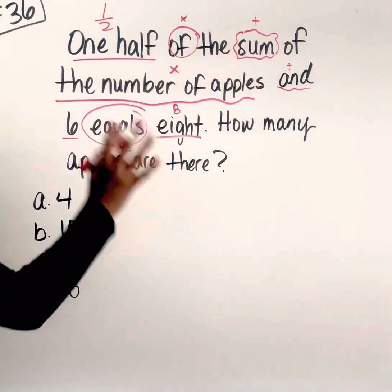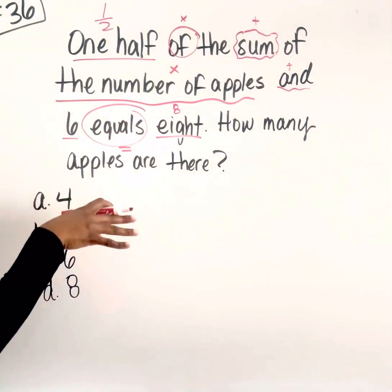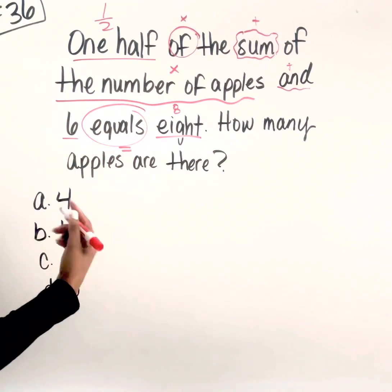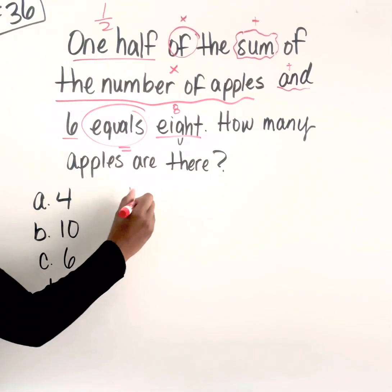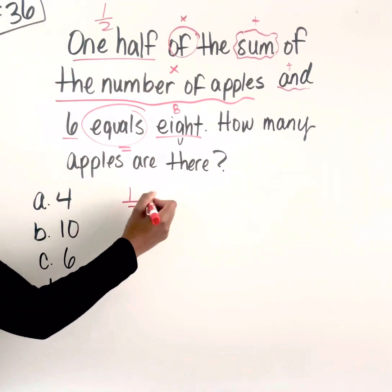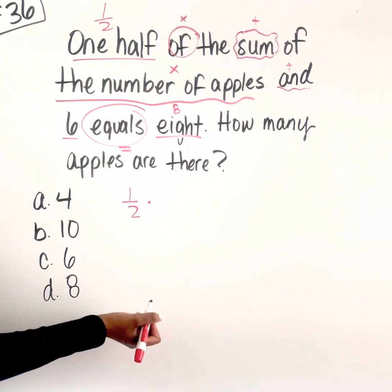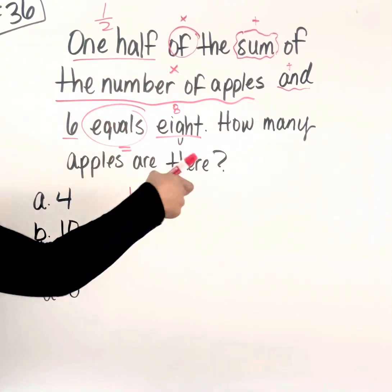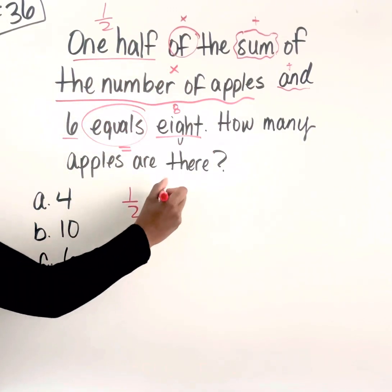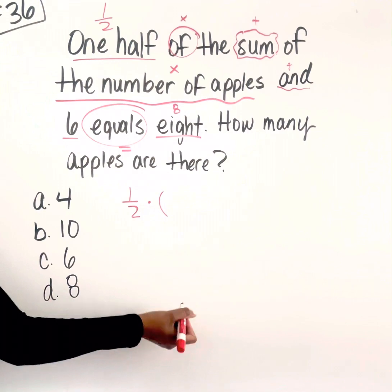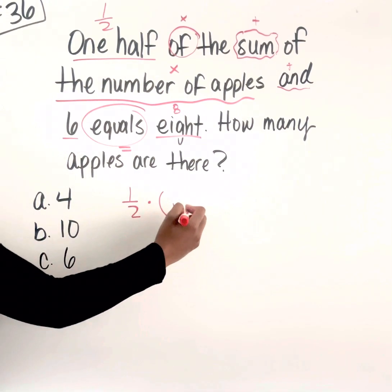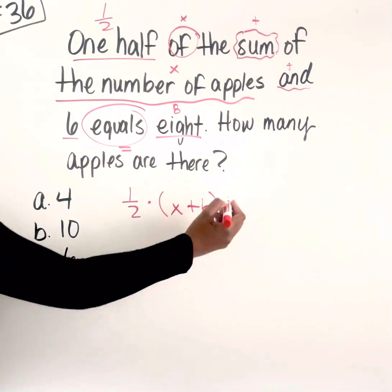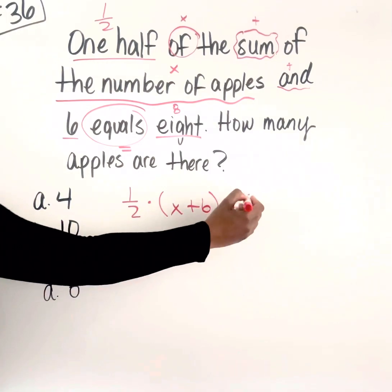Let's go ahead and write it out in raw form first, and then we'll simplify. So we have one half, and then a dot for times. Because it's the sum of something, that's going to go in parentheses — we're going to have X plus six. And then equals eight.